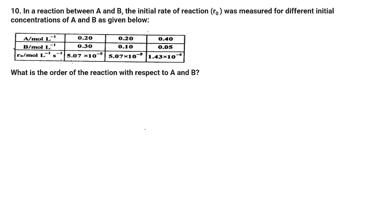Let's read the question first. In a reaction between A and B — these are the two reactants — the initial rate of reaction R₀ was measured for different initial concentrations of A and B as given in the table. The first condition has A concentration 0.20 mol/L, B concentration 0.30, and an initial rate. You have three conditions given in the table.